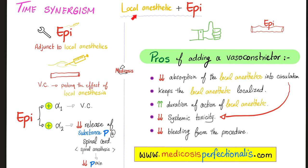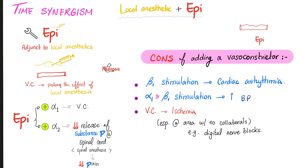Why do we add epinephrine to the local anesthetic? Epinephrine is a vasoconstrictor, which decreases absorption of the local anesthetic into the circulation, decreasing toxicity and risk of bleeding. Moreover, the anesthetic stays in place, increasing the duration of action — this is called time synergism. Disadvantages: epinephrine is a beta-1 agonist and can cause cardiac arrhythmia; as an alpha-1 and beta-1 agonist it can increase blood pressure; and vasoconstriction can lead to ischemia, especially in areas with poor anastomosis.